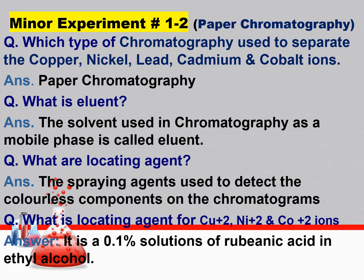Sometimes we require a locating agent. Someone may ask: what are locating agents? A locating agent is used to detect the colorless components on the chromatogram. What is the locating agent used for copper ion, nickel ion, or cobalt ion? It can be a 0.1% solution of rubeanic acid in ethyl alcohol.